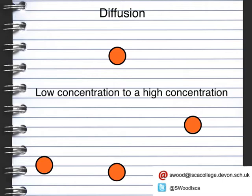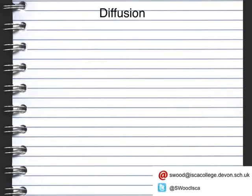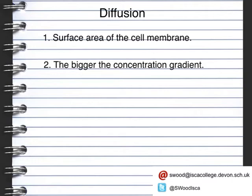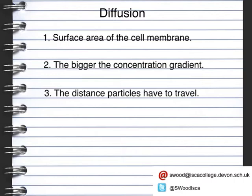The rate of diffusion can change and vary due to several factors. Firstly, the surface area of the cell membrane. Secondly, the size of the concentration gradient — the difference between the low and high concentration. If there is a big concentration gradient, then there will be more movement. Thirdly and finally, the distance the particles have to move. A shorter distance means diffusion happens a lot quicker than over a greater distance.